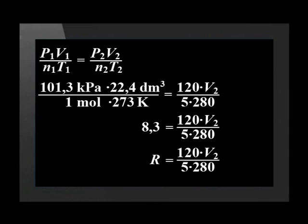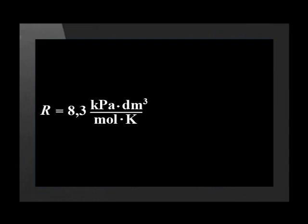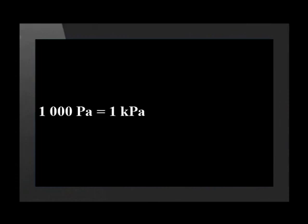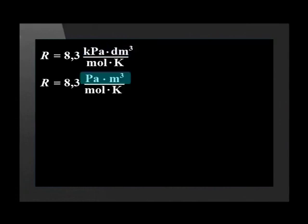Let's add the units we used in the equation. So R can be written as 8.3 kilopascal decimeters cubed divided by mol Kelvin. But this is not how we normally give R's unit. A kilopascal is a thousand times more than the SI unit for pressure, the Pascal. A decimeter cubed is a thousand times less than the SI unit meters cubed. These two effects cancel one another out, so that kilopascals times decimeters cubed is the same as Pascals times meters cubed.